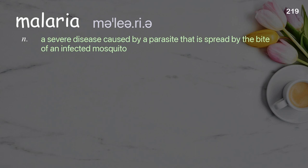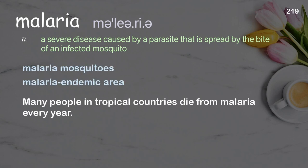Malaria: a severe disease caused by a parasite that is spread by the bite of an infected mosquito. Examples: malaria mosquitoes, malaria endemic area. Many people in tropical countries die from malaria every year.